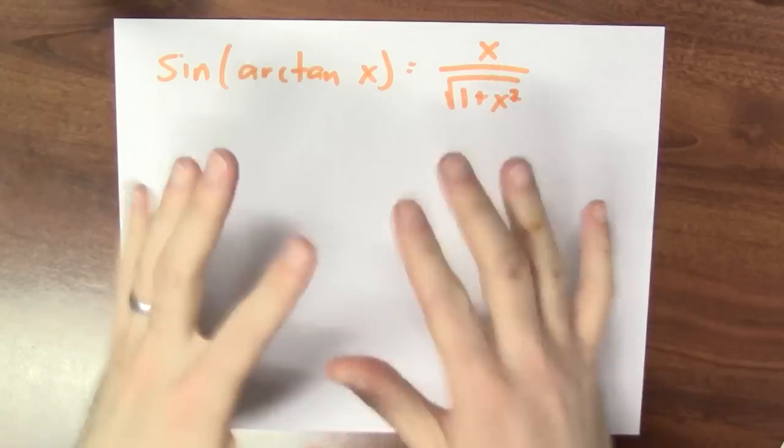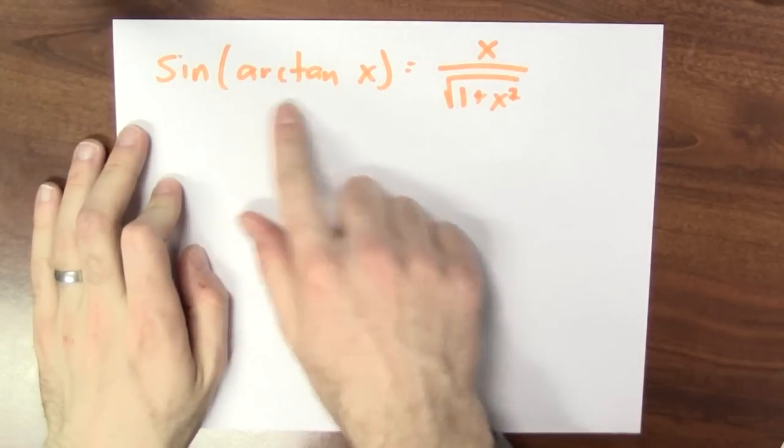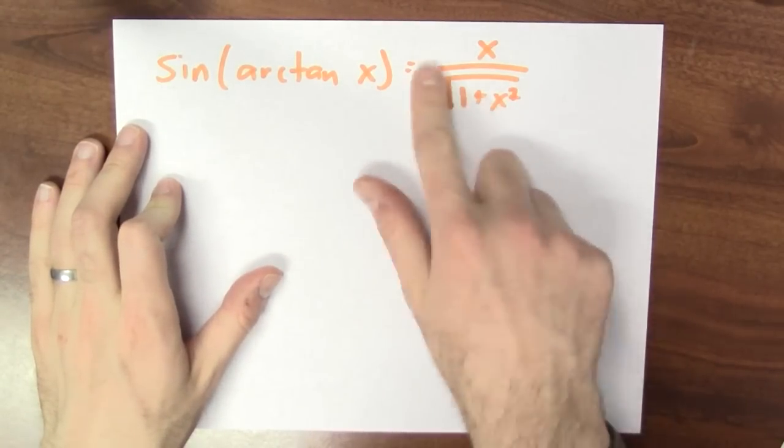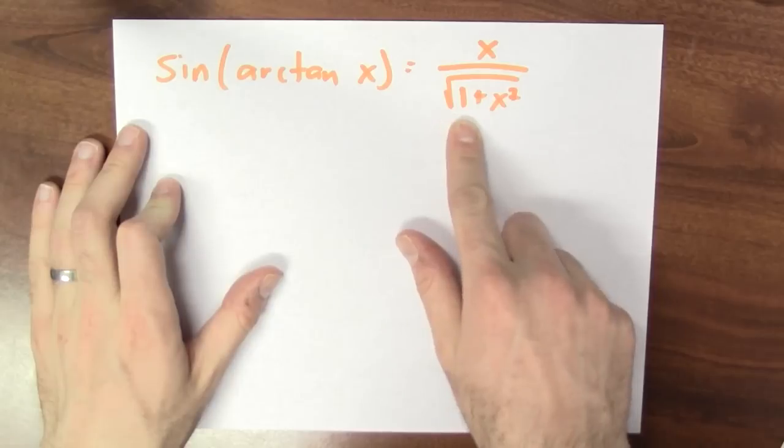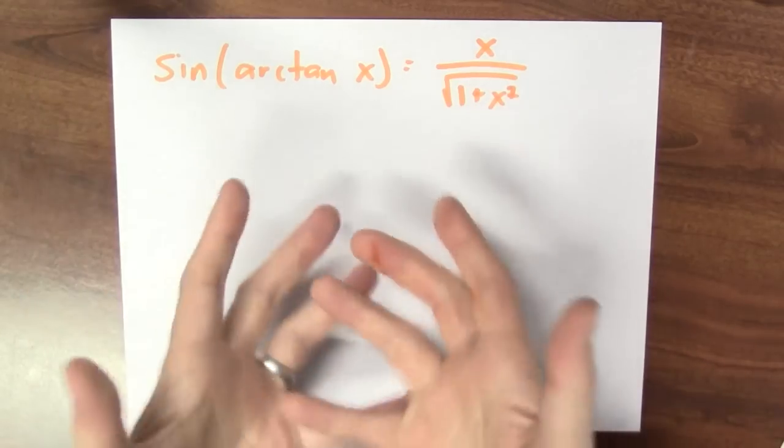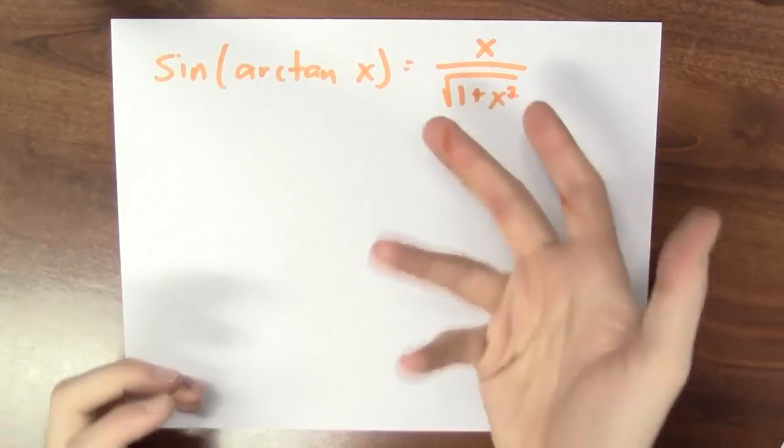For example, the sine of arctan of x happens to be equal to x divided by the square root of 1 plus x squared. Where would you possibly get a formula like that?